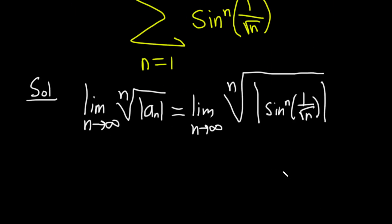Now you can bring this power outside the absolute value and the square root of n and this is to the nth power so these will basically cancel. So we're basically going to have the limit as n goes to infinity of sine of 1 over square root of n.